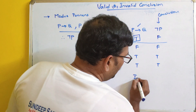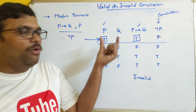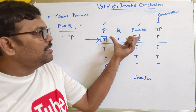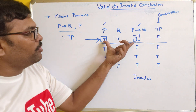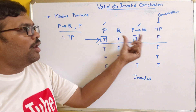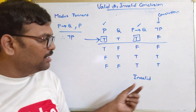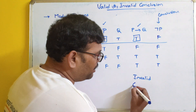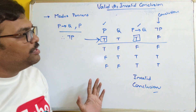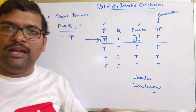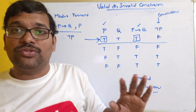That implies it is an invalid conclusion. For every row where all premises are true, the corresponding conclusion should also be true. Here we have only one combination where all premises are true, but the final conclusion is false in this case. So that implies it is an invalid conclusion. By using truth tables, we can check whether a given conclusion is valid or invalid without using any inference rules.